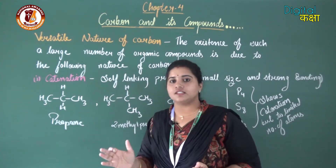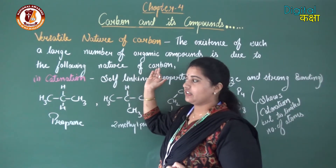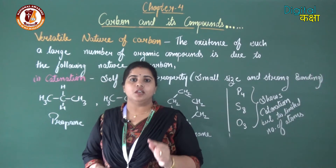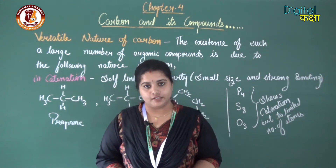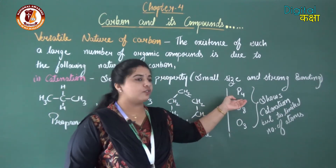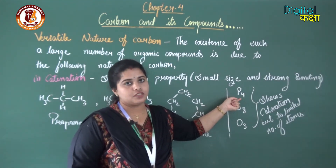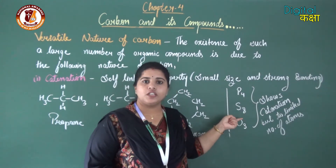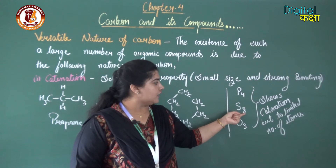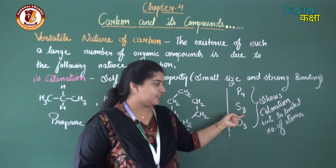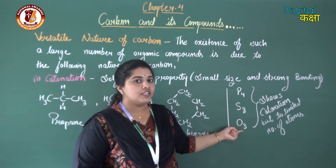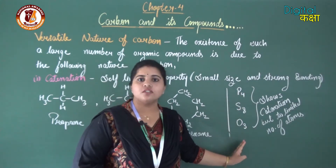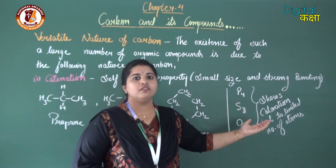The first reason for carbon's versatile nature is catenation. Catenation is the self-linking property of carbon — carbon can form a bond with another carbon atom. Other elements also show catenation: phosphorus combines with four phosphorus atoms to form P4, sulfur forms S8 with eight sulfur atoms linked together, and oxygen forms ozone O3 with three oxygen atoms linked. But these are the limitations — after four, after eight, after three, a fifth or ninth atom will not come and bond.